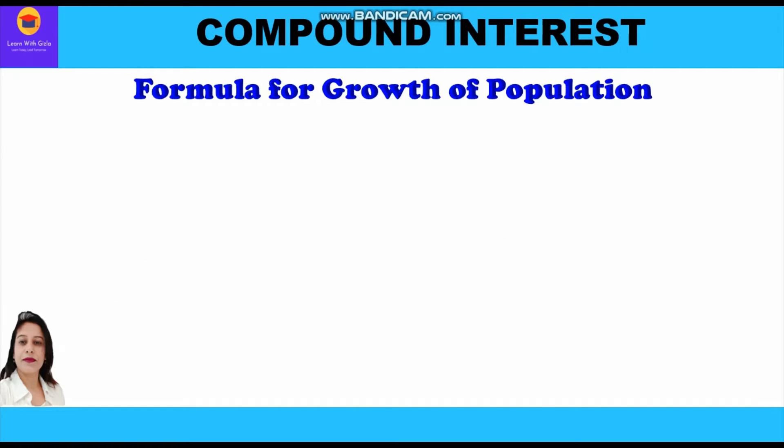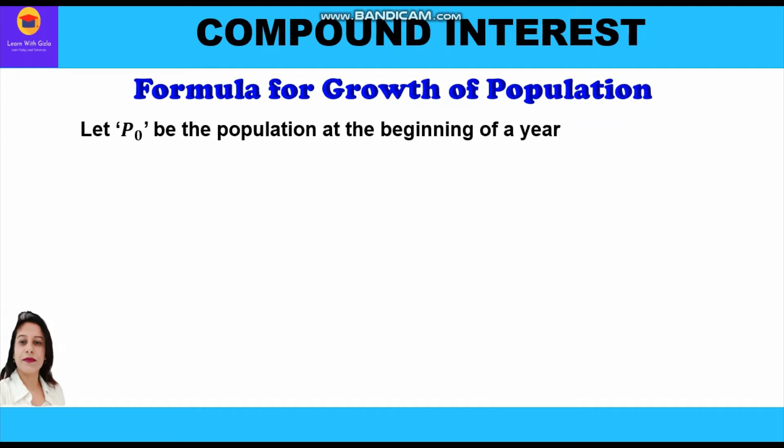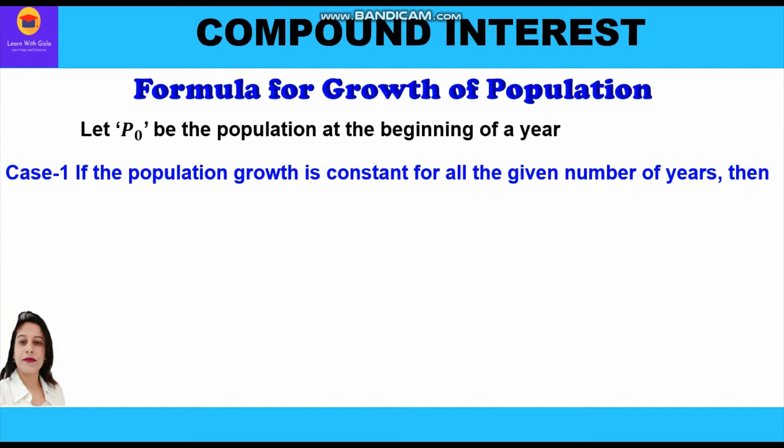Now let us study the formulas we are going to use for the growth of any quantity. There are a total of four cases which we will take up in the case of population. Let P0 be the population at the beginning of a year.